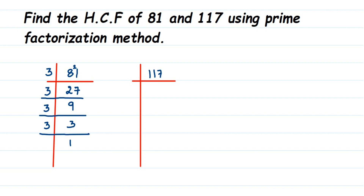So for 117, it goes in the 3 table: 3 threes are 9, remainder 2 — write this along with 7, making 27. 3 nines are 27. Then we got 39: 3 ones are 3 and 3 threes are 9, so we got 13. 13 is a prime number, so 13 ones are 13. Remember, when dividing, always divide with prime numbers, since we want to express this in prime factors.